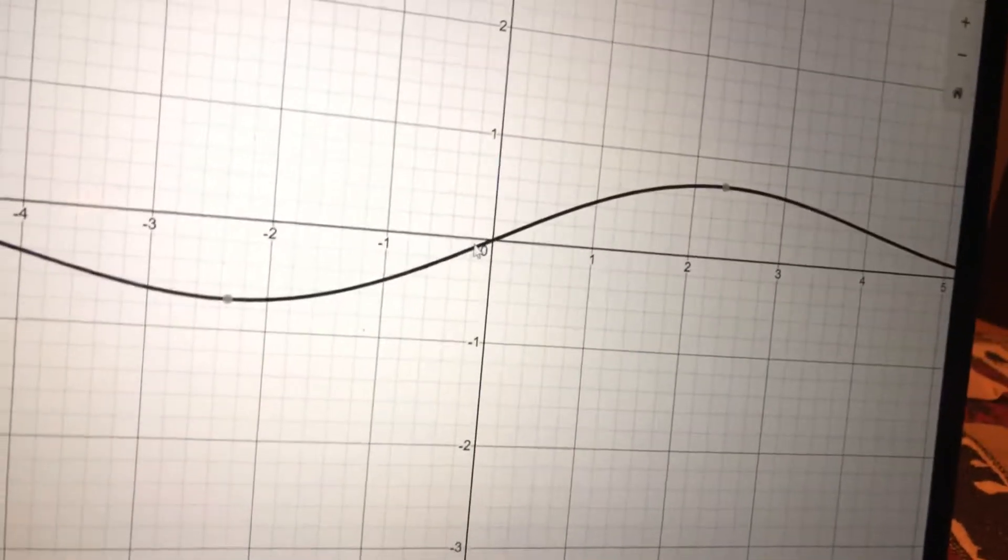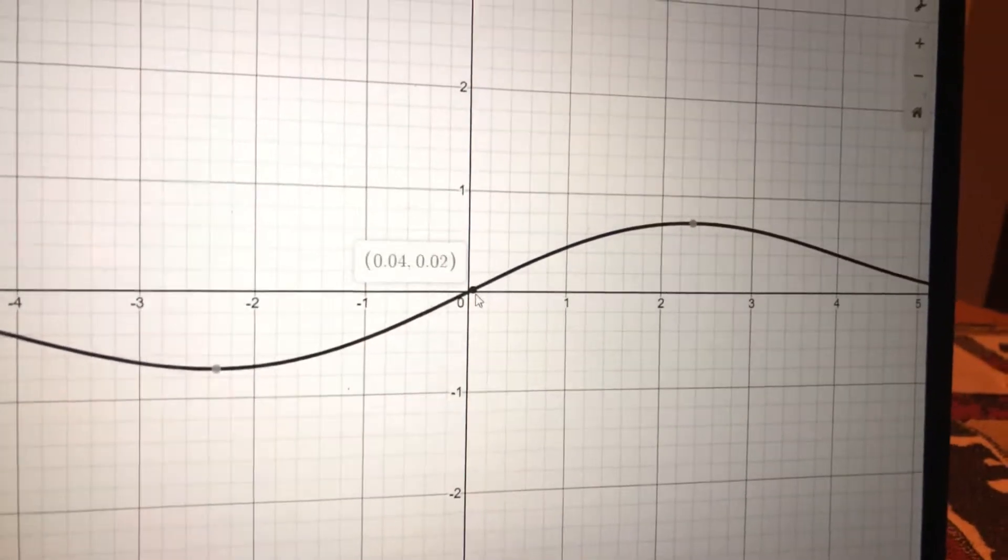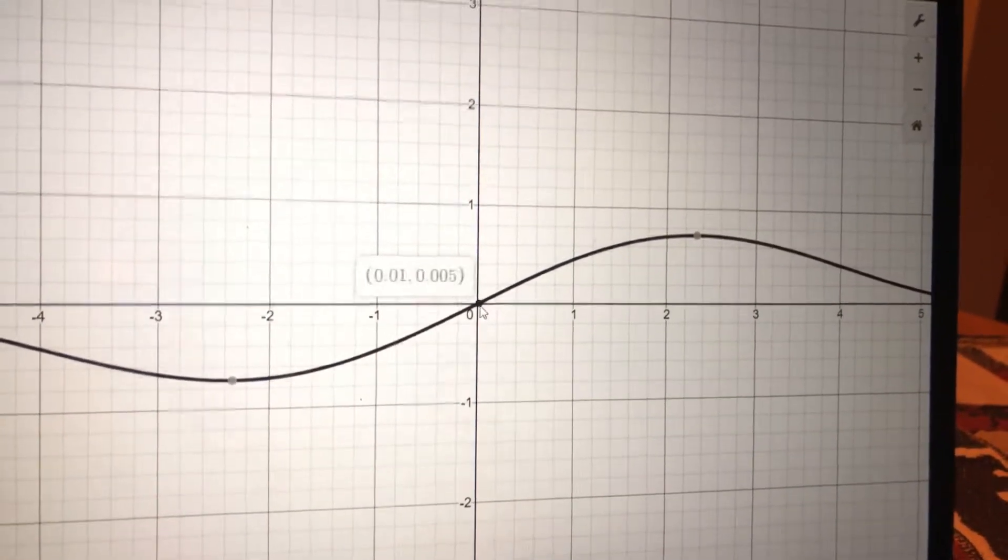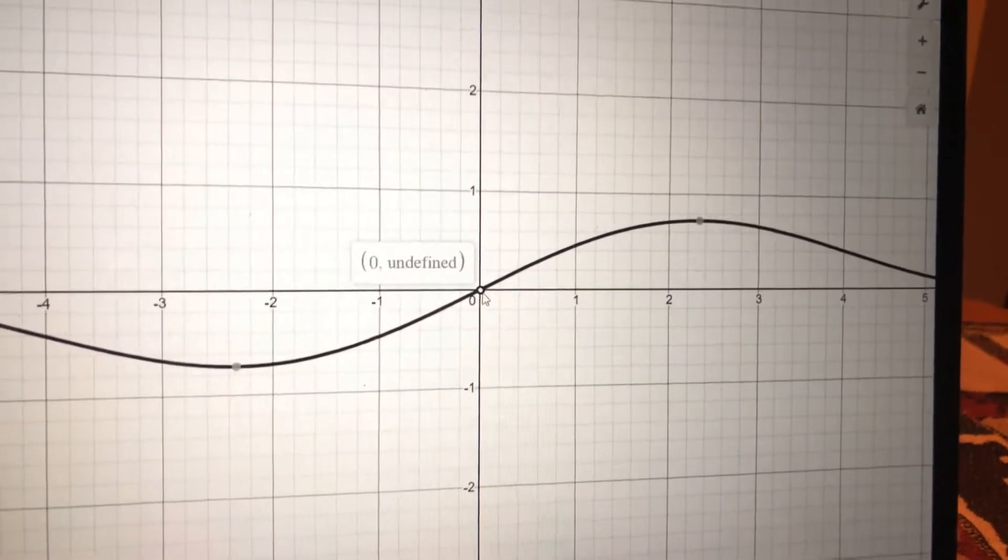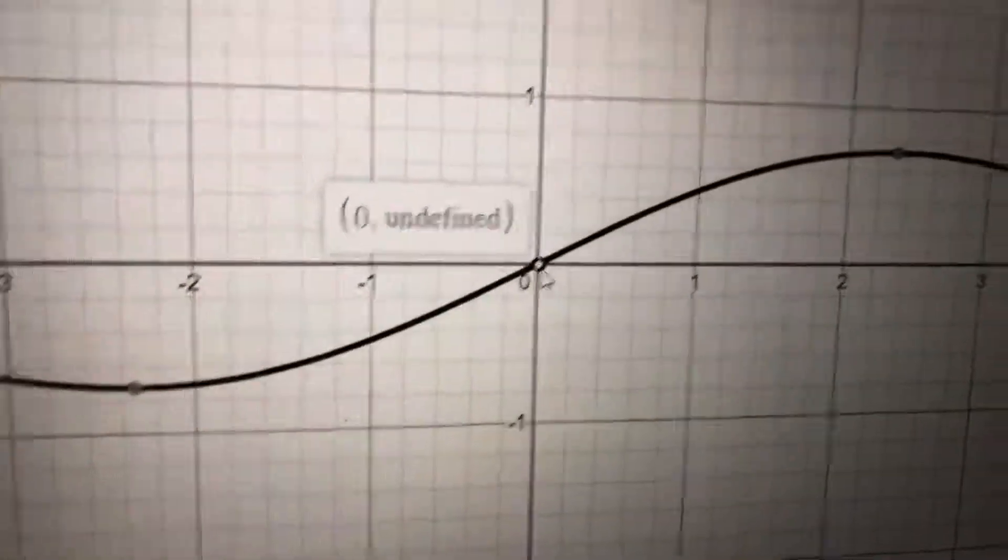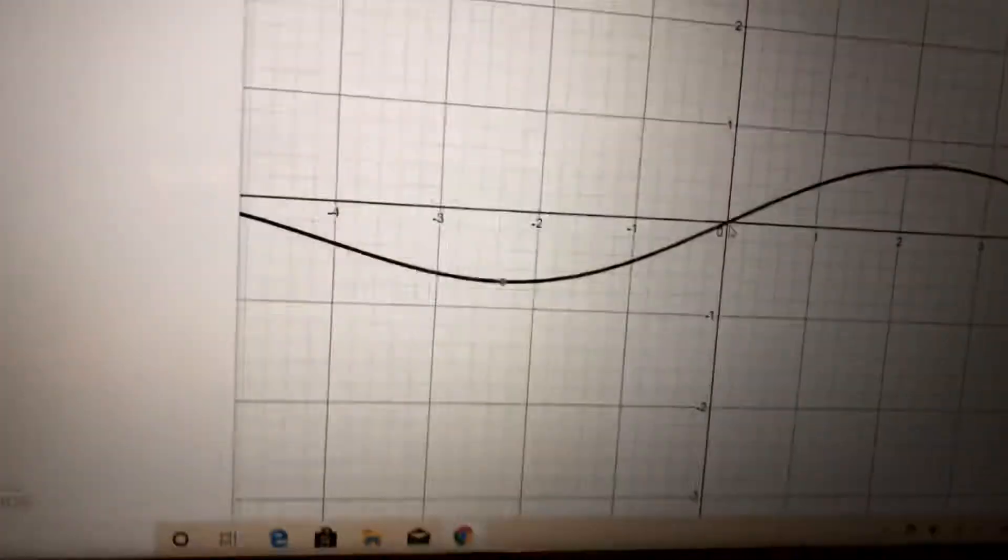But when we actually go to 0, I got 0 comma undefined. There's that little empty point in there. So that can't be found algebraically. That right there is the beauty of limits, which is kind of, I think, kind of the most basic idea of calculus.